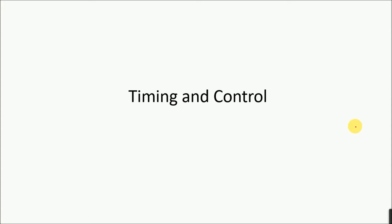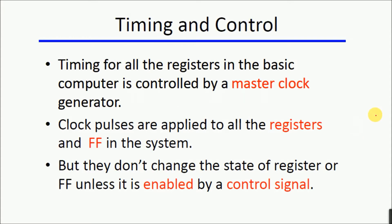Let's first start with what is timing and control. Timing for all the registers in the basic computer is controlled by a master clock generator. These clock pulses are applied to all the registers and flip-flops in the system, but they don't change the state of the register or flip-flop unless it is enabled by a control signal as well. So to change the state of a register or a flip-flop — and a register is also a combination of flip-flops — we need a clock pulse as well as an additional signal that is enable or load. Just giving a clock will not update the state; we need both of them together.